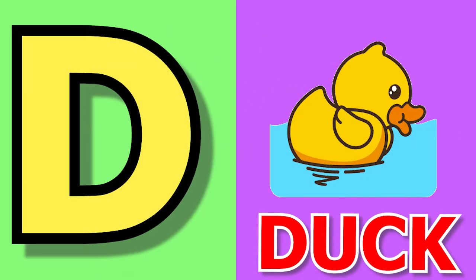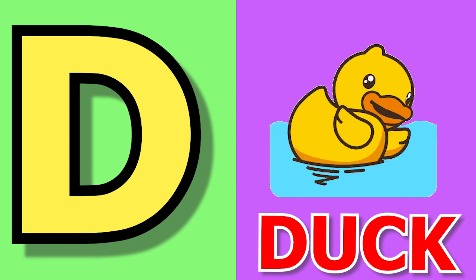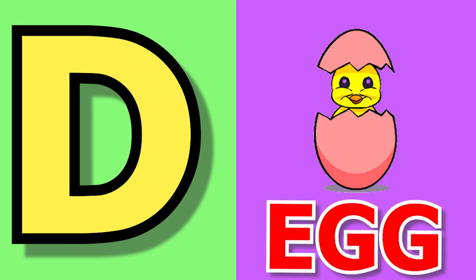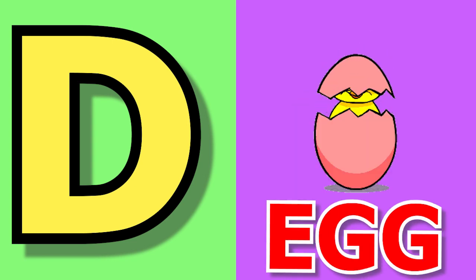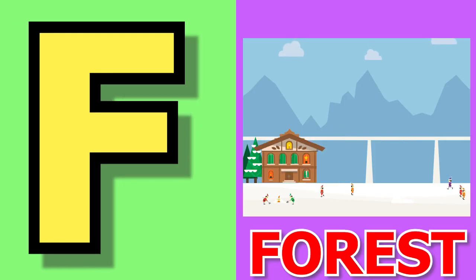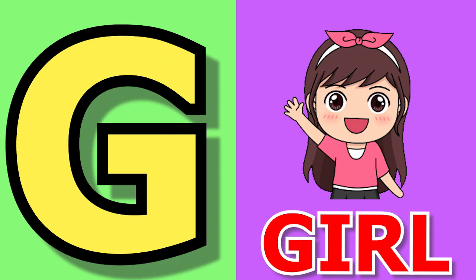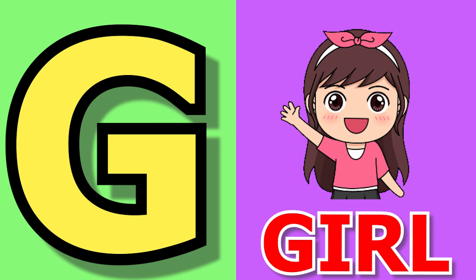D for duck, duck means buttock. E for egg, egg means under. F for forest, forest means jungle.